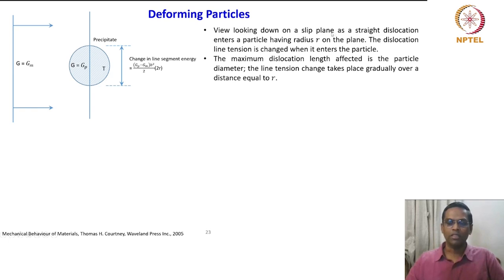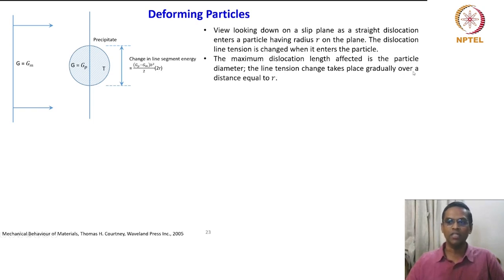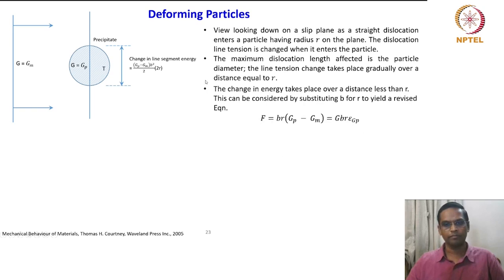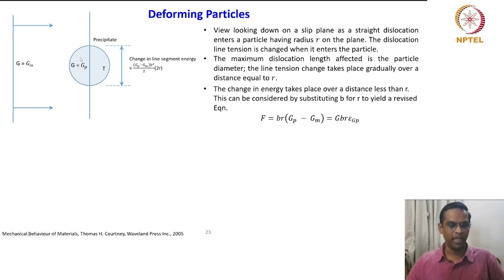Looking down on the slip plane, as a straight dislocation enters a particle of radius R on the plane, the dislocation line tension is changed. The maximum dislocation length affected is the particle diameter — it can travel from one side to the other, that is 2R. The line tension change takes place gradually over a distance equal to R, and the maximum change happens at the center. The change in energy takes place over a distance less than R, which can be accounted for by substituting b for R to yield a revised equation.